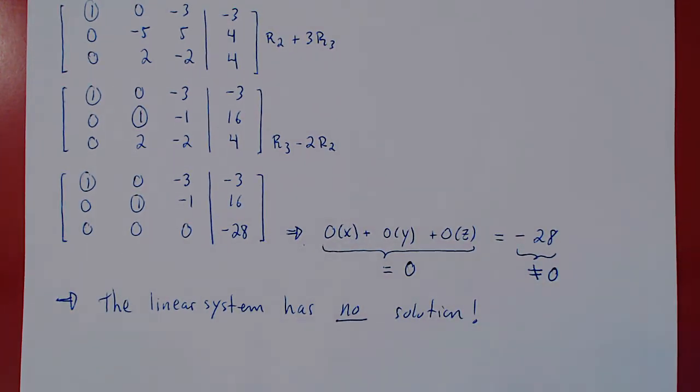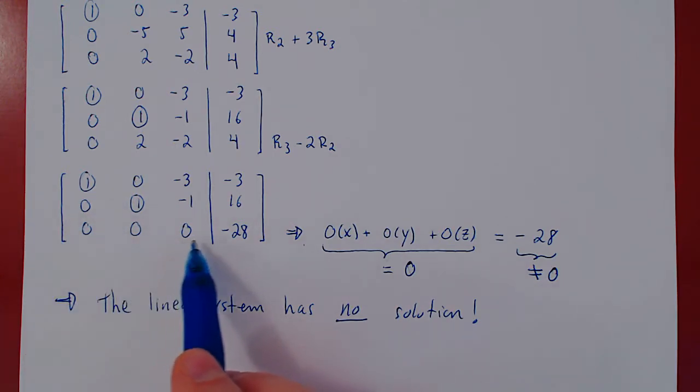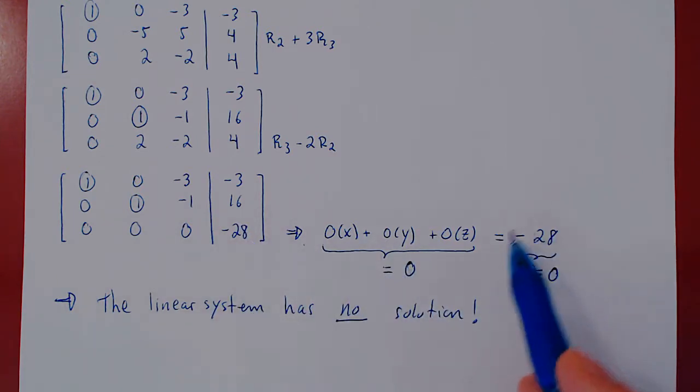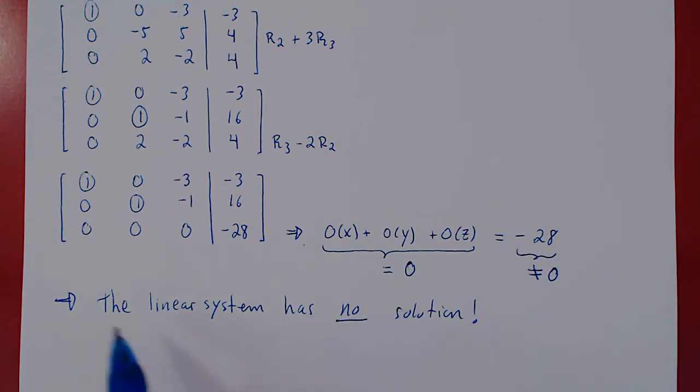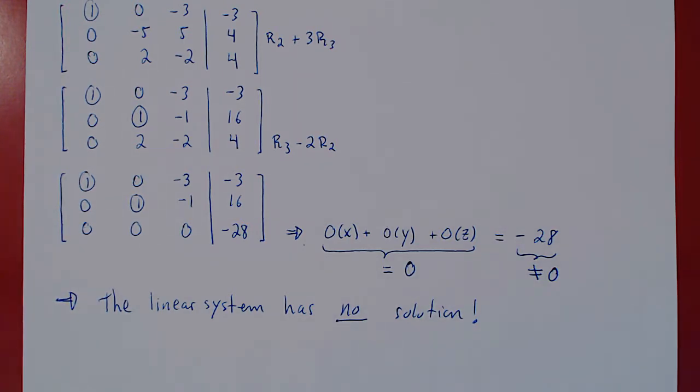So you always have to be on the watch for this potential problem. And this is the only way to have no solution. Where every coefficient is equal to 0, but the constant term is not 0. This will always imply that 0 equals a non-zero number, which is not possible, and will always therefore imply that the linear system has no solution. And that's it. We tried to solve the system, but there is no solution to be found. And that is our conclusion.